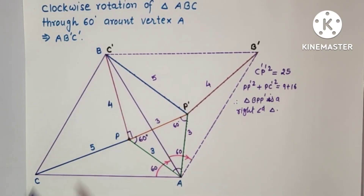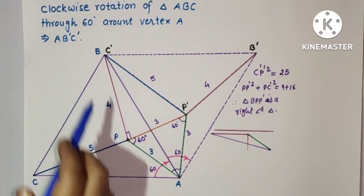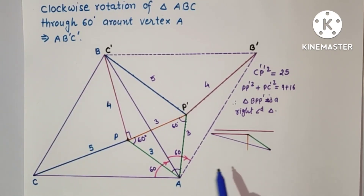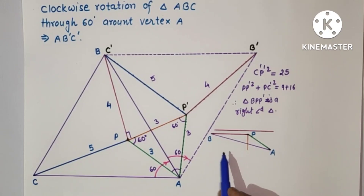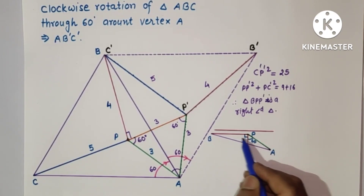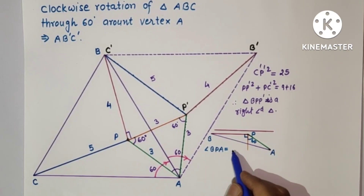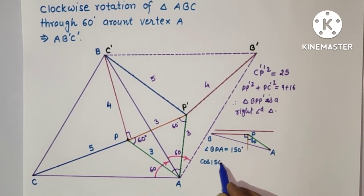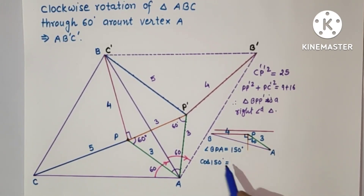Therefore, for triangle BPA, angle BPA is equal to 90 plus 60, which equals 150 degrees. Here is triangle BPA: B, P, and A. The angle at P is 90 from the right angle and 60 from the rotation, giving 150 degrees. So angle BPA equals 150 degrees. Applying the cosine rule with PA equal to 3 and PB equal to 4.